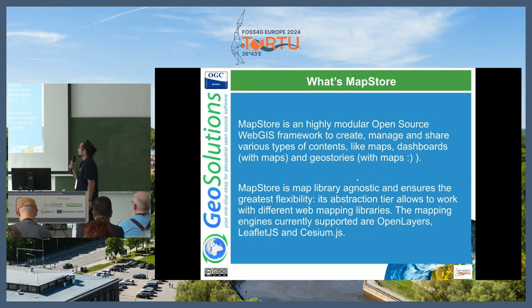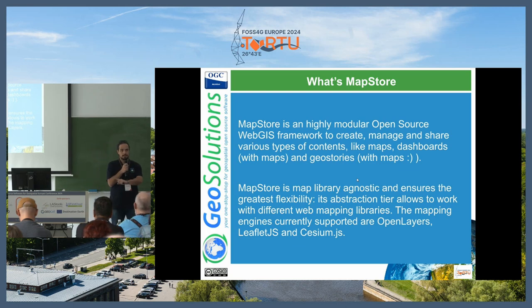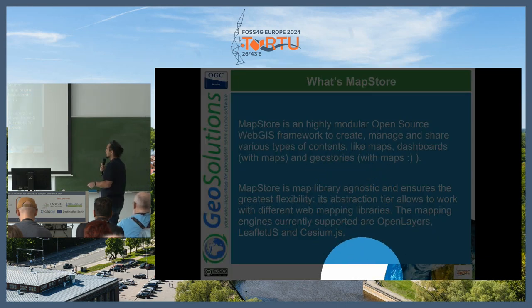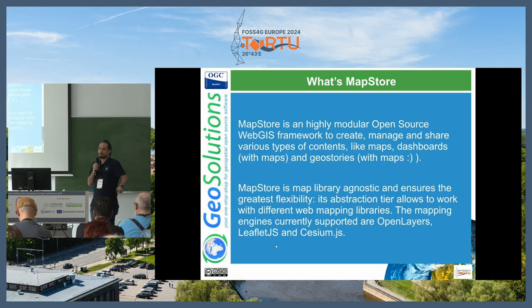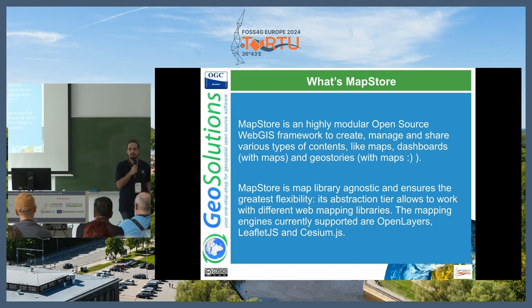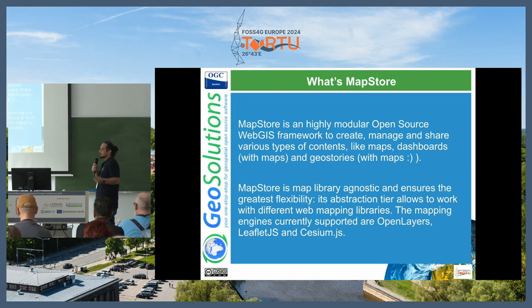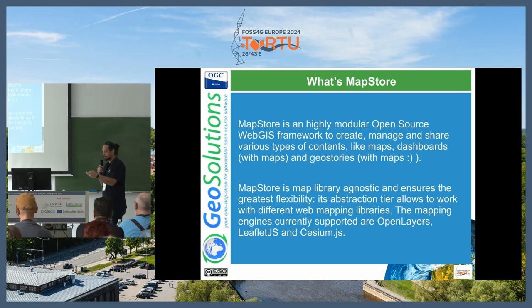MapStore is also mapping library agnostic — a cool way of saying it's independent from the underlying library used. MapStore supports OpenLayers, Leaflet, and Cesium. And in the future, if one of these libraries becomes closed source or stops being maintained, we can switch to the next library without losing all the features of MapStore.